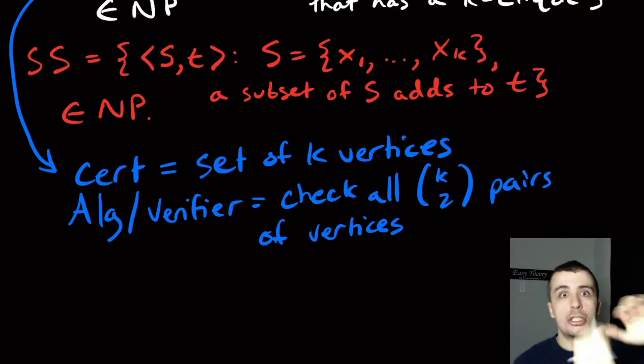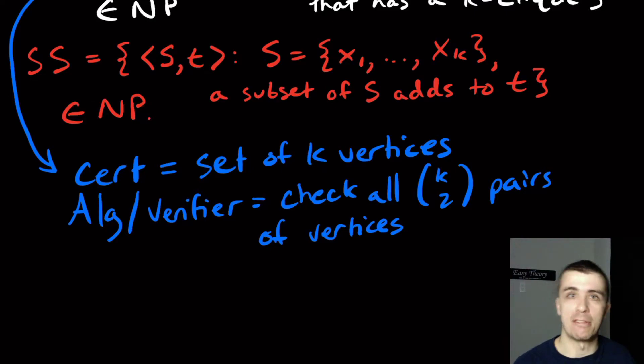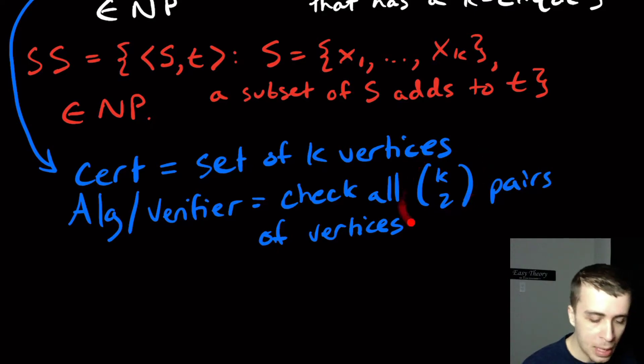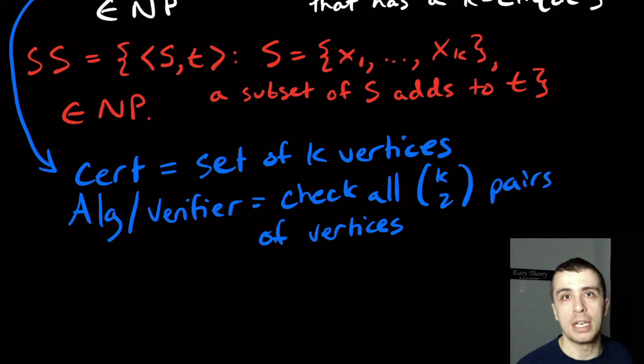But if all k choose 2 have an edge present, then we can know that that graph and that integer belong to CLIQUE. And that runs in polynomial time because this number, which is effectively dominating the runtime, is at most n squared because k is at most n and k choose 2 is at most n squared. And n squared is definitely a polynomial in the size of the graph, which is n plus the number of edges. It's polynomial in the size of the graph.